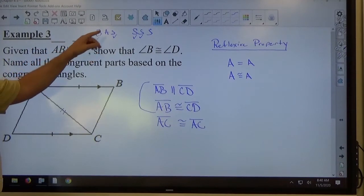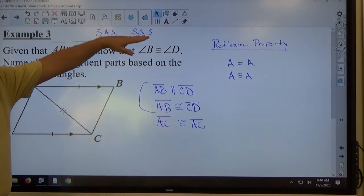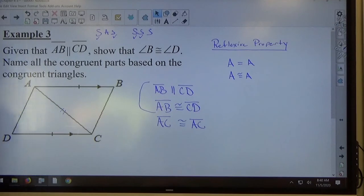So if I go with side-angle-side, I have to show a pair of angles are congruent. If I go with side-side-side, I have to show a pair of sides are congruent, right? So let's start with the side-side-side. Let's look at that.